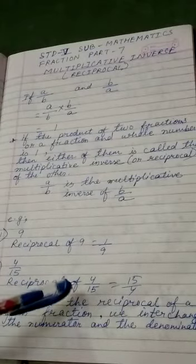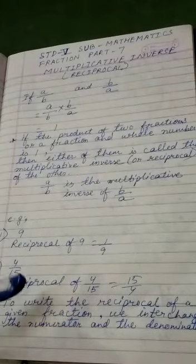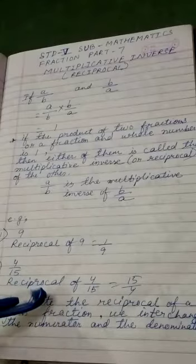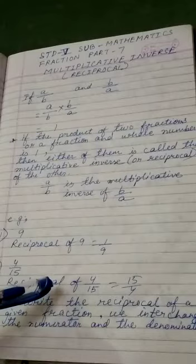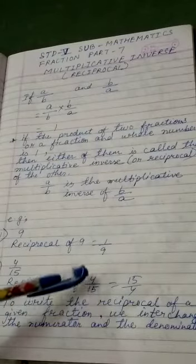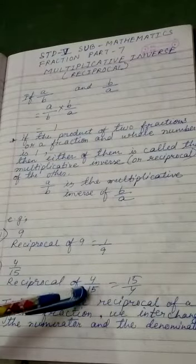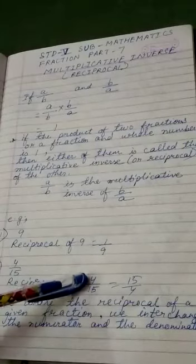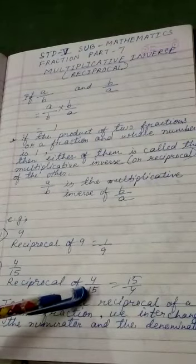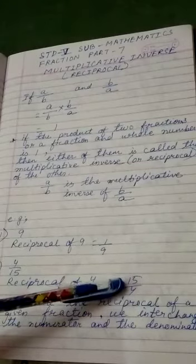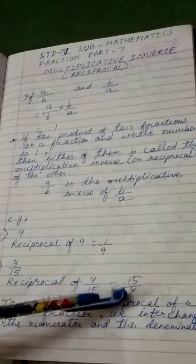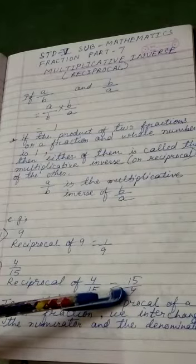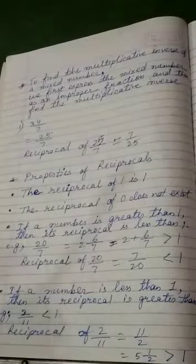What do we observe from these examples? That to write the reciprocal of any given number, whether it is a whole number or a fraction, we have to interchange the position of numerator and denominator. As here numerator is 4 and denominator is 15, we will interchange their position 15 in numerator and 4 in denominator.